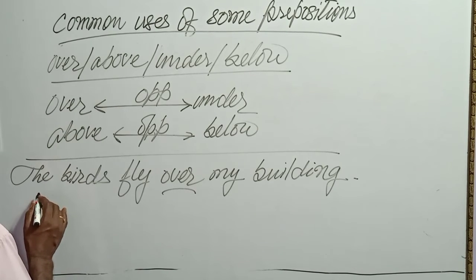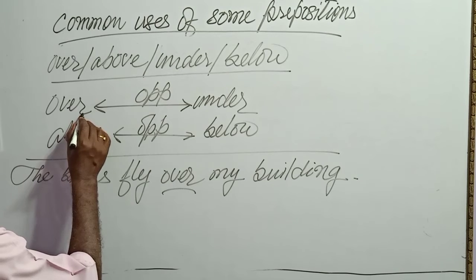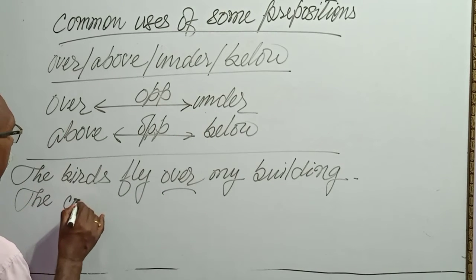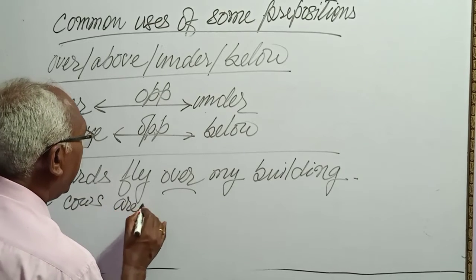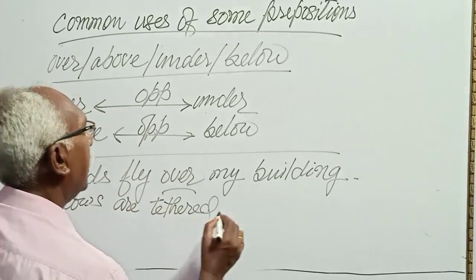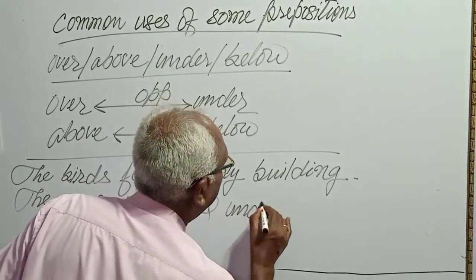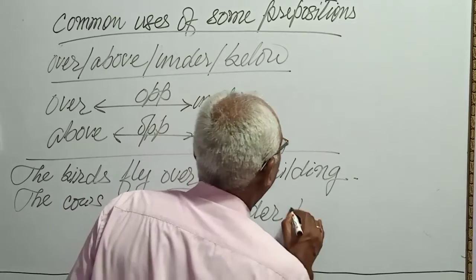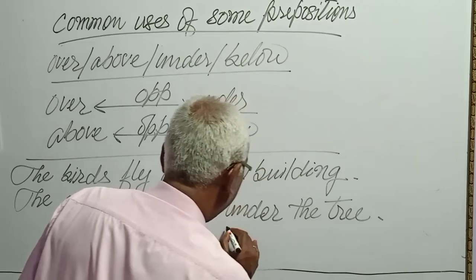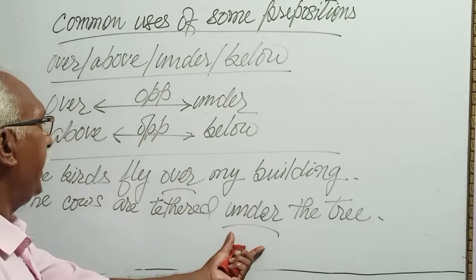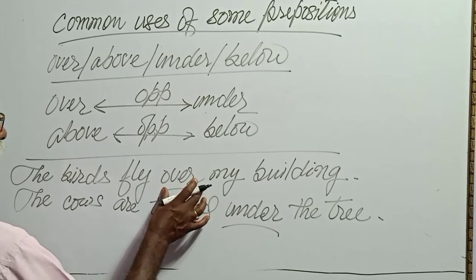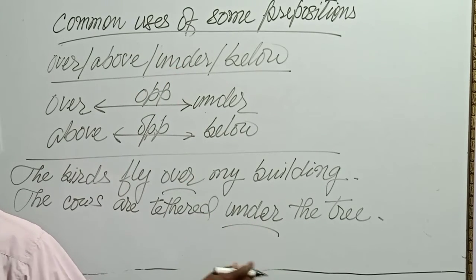Over opposite is under. The cows are resting, chhaya se baithi hui, under the shady tree. Under chhaya ni chhe. Over ke upar, under chhaya chhe.